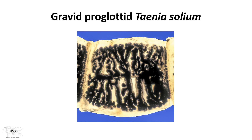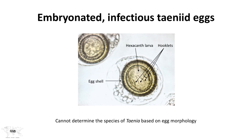Here's an example of a gravid proglottid for Taenia Solium. It has a very different morphology than the gravid proglottid for Taenia Saginata, and indeed this is the way in which you make the diagnosis between those two tapeworms. The egg, however, cannot be distinguished — it's the same picture I showed before for Taenia Saginata. Even if you had eggs from both proglottids mixed together, you wouldn't be able to tell them apart.